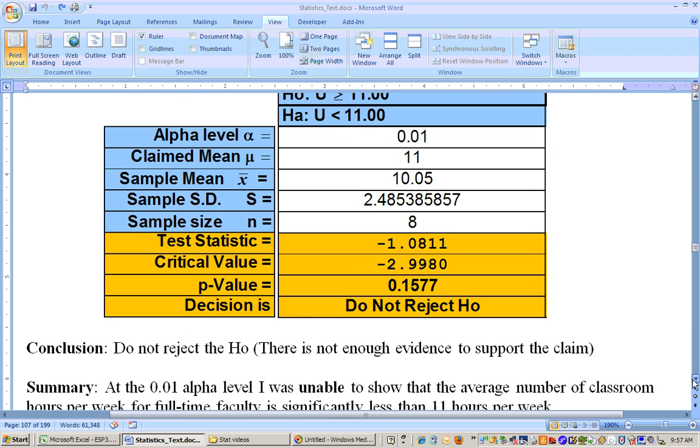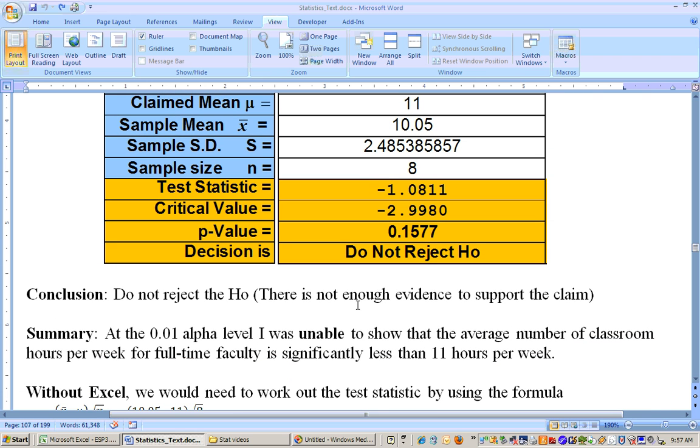And here it is worked out for you right there. Okay, there's not enough evidence to support the claim. At the 0.01 alpha level, I was unable to show that the number of, the average number of classroom hours per week for full-time faculty is significantly less than 11. Unable to show that.